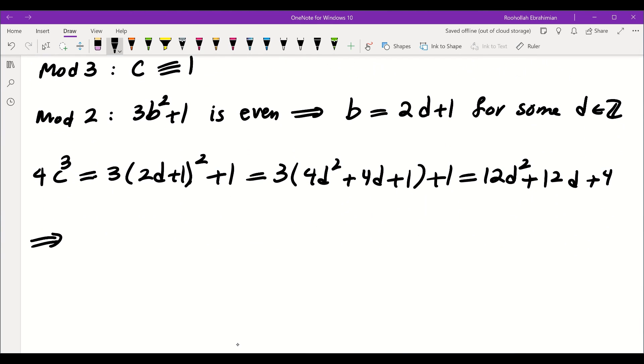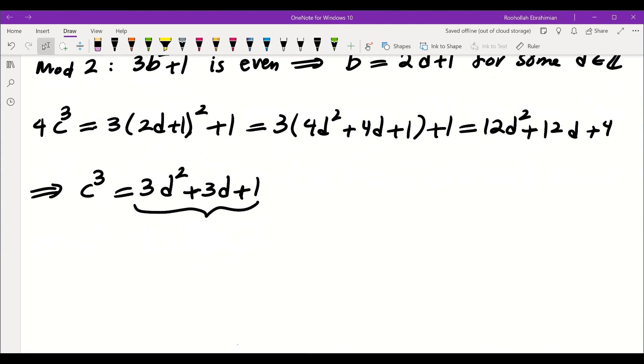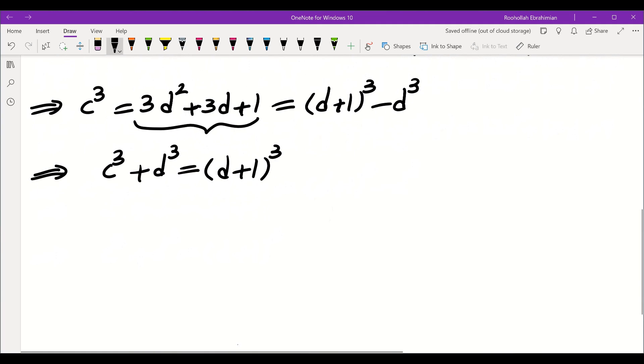We're going to divide both sides by 4. We get c cubed is equal to 3d squared plus 3d plus 1. Okay, so this is really suspicious to me. When I looked at this one, this reminded me of a perfect cube. So this is almost like d plus 1 cubed. But I have to subtract d cubed from that. So that's really interesting because that gives me c cubed plus d cubed is equal to d plus 1 cubed.